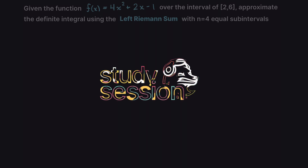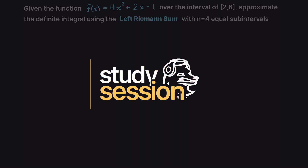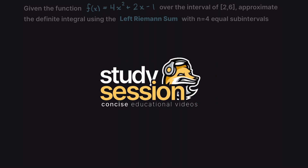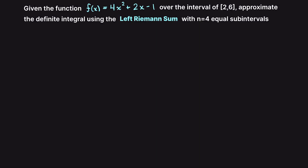Hey everyone. In this example video we are asked to approximate the definite integral of the function 4x squared plus 2x minus 1 over the interval 2 to 6 using the left Riemann sum with 4 equal subintervals.